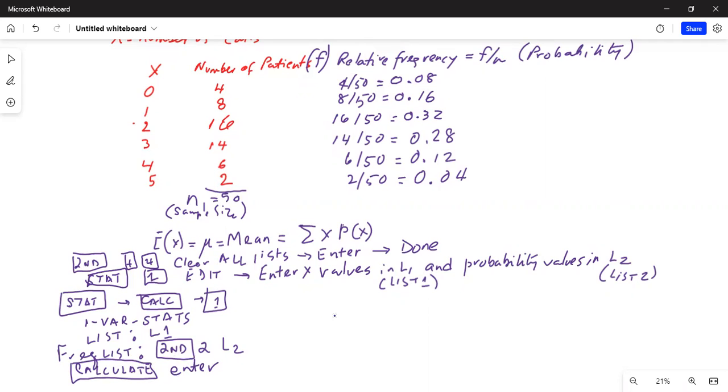And then the first line is your expected value of the number of calls. Remember, this is the expected value of the number of calls, and E(x) is also given as mu which is mean. In our calculator it will be shown as x bar. The reason is the calculator does not know whether it's a sample or population data, so it gives x bar. The formula for x bar and mu are the same. So x bar is 2.32.